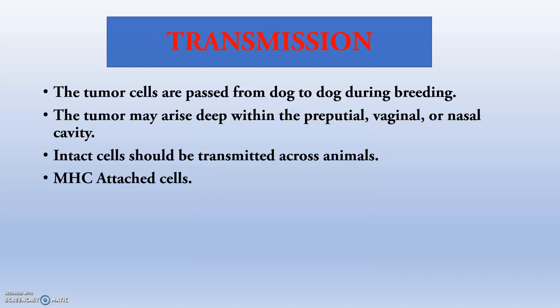Regarding transmission, the tumour cells are passed from dog to dog during breeding or unwanted coitus. The tumour may arise deep within the preputial, vaginal, or nasal cavity. Intact cells of the tumour are transmitted across the animal during breeding or coitus. Intact cells means MHC-attached cells, and these cells are actually the vector of transmission of canine TVT.